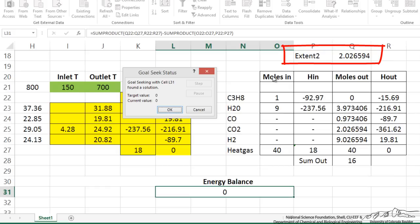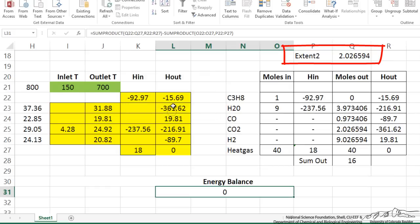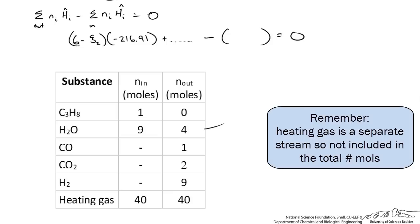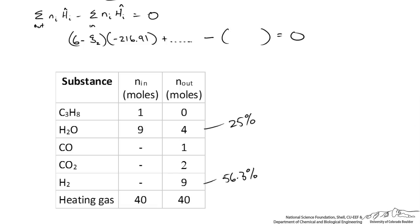Goal Seek gives an extent of reaction for the second reaction essentially equal to 2. Plugging ψ₂ = 2 into the enthalpy table gives the molar amounts leaving the reactor. The composition is found by dividing each amount by the total: for example, water is 25 mole percent and hydrogen is 56.3 mole percent. This demonstrates how combining material and energy balances solves for an unknown stream parameter.